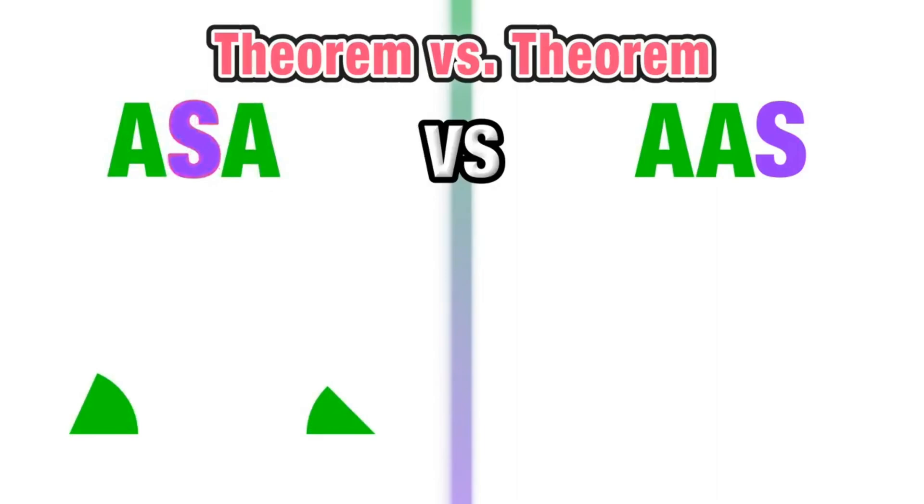Angle-side-angle has two congruent angles with the side in between those angles, just like it's written—the S is in between the two A's. Angle-angle-side has two congruent angles, but in this case they are consecutive and the side comes after that, so we have two congruent angles in a row and then a side.